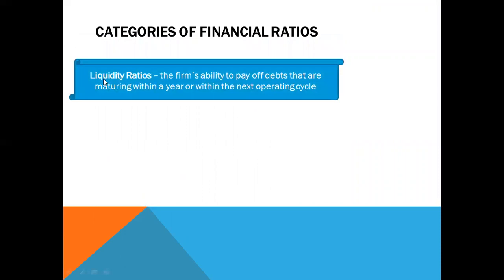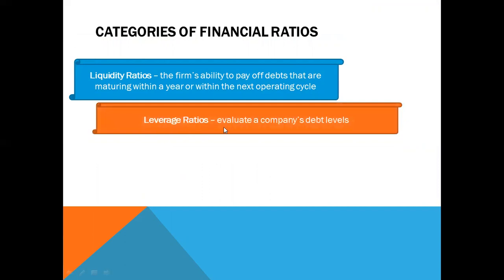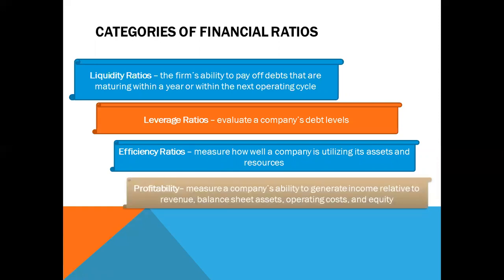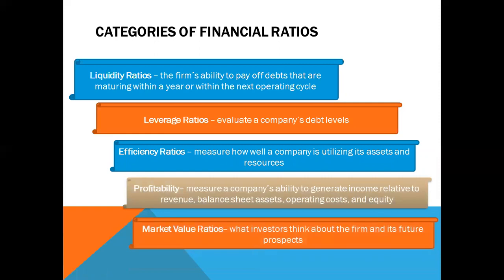First, we have liquidity ratios — the firm's ability to pay off debts that are maturing within a year or within the next operating cycle. Leverage ratios evaluate a company's debt levels. Efficiency ratios measure how well a company is utilizing its assets and resources. Profitability measures a company's ability to generate income relative to revenue, balance sheet assets, operating costs, and equity. And market value ratios reflect what investors think about the firm and its future prospects.